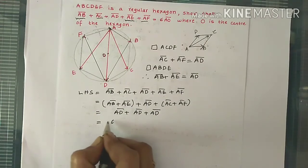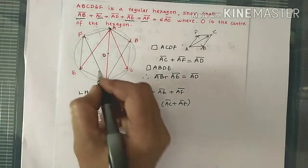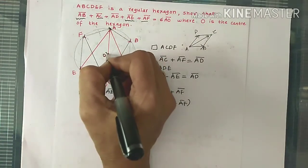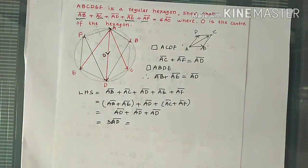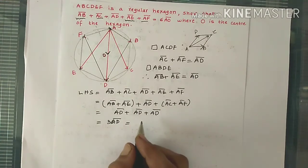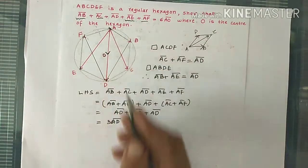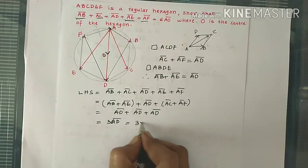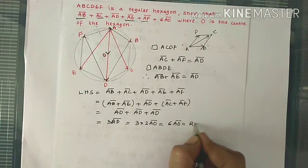Rearranging the given left side: AB bar plus AC bar plus AD bar plus AE bar plus AF bar. Writing it as (AB bar plus AE bar) plus AD bar plus (AC bar plus AF bar) — from the two equations above, each bracket equals AD bar. So the sum equals 3AD bar. Now AD is the diameter and AO is the radius, so AD bar equals 2AO bar. Therefore the total becomes 3 times 2AO bar, which equals 6AO bar — equal to the right-hand side.